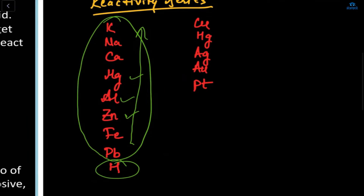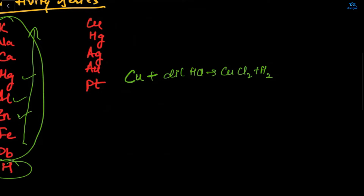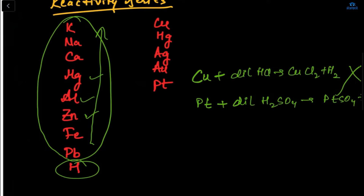For example, copper plus dilute HCl giving CuCl₂ plus H₂ — this reaction is wrong. Similarly, platinum plus dilute H₂SO₄ giving PtSO₄ plus H₂ is also incorrect, because Cu and Pt are metals below hydrogen in the reactivity series.